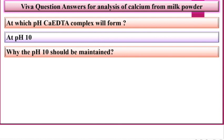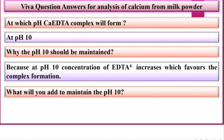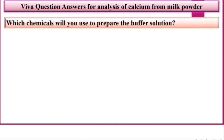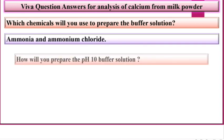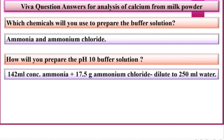Why should pH 10 be maintained? Because at pH 10, the concentration of EDTA⁴⁻ increases, which favors the complex formation. What will you add to maintain pH 10? Buffer solution. Which chemicals will you use to prepare the buffer solution? Ammonia and ammonium chloride. How will you prepare the pH 10 buffer solution? 140 ml concentrated ammonia plus 17.5 grams ammonium chloride, diluted to 250 ml using distilled water.